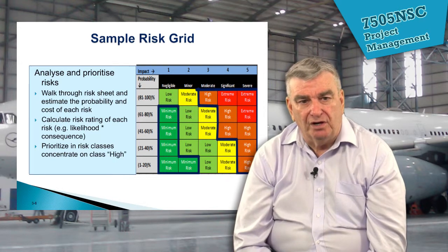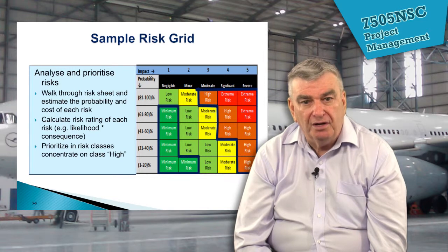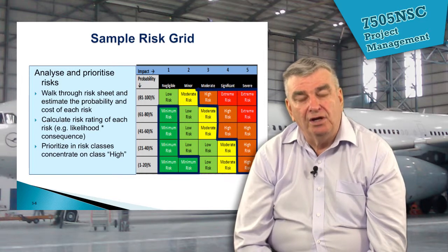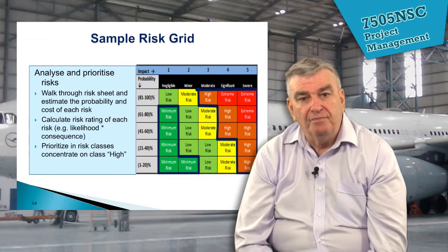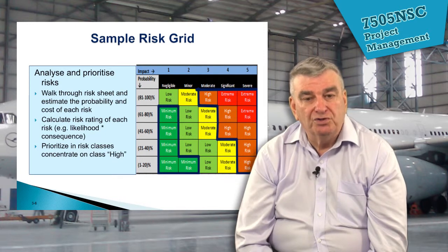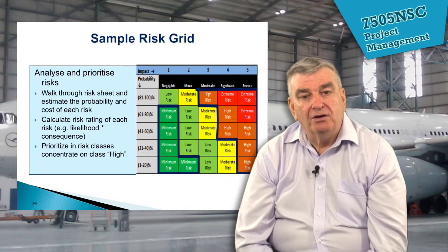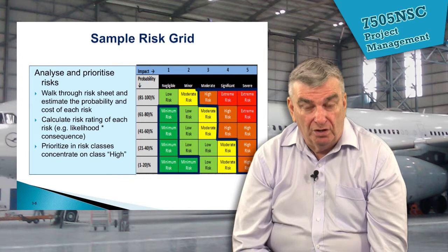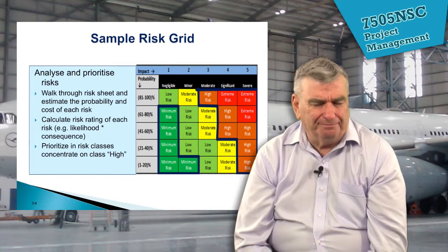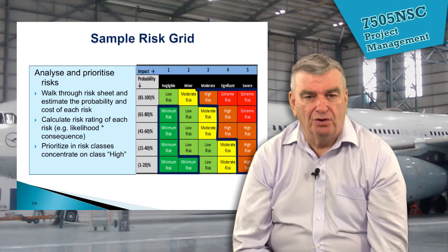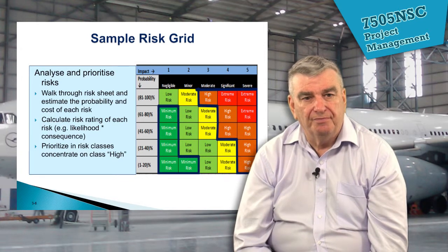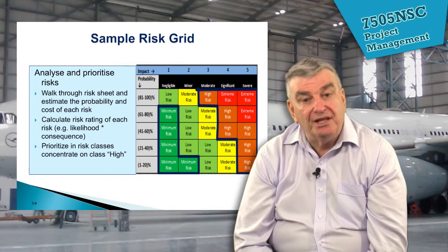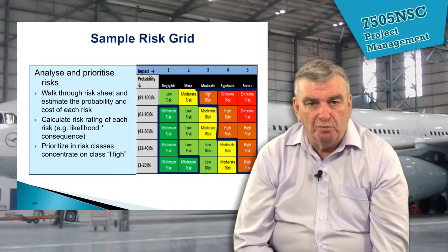We'll look at a sample risk grid. By working out the actual probability or likelihood and looking at the impact of a risk occurring, and grading these according to a scale of 1 to 5 or in percentage terms, we can work out how the risks appear on a matrix. The extreme risks are the ones we've got to attack immediately. Where there are minimal risks, it might be cheaper to simply tolerate that risk than to spend money trying to reduce it. Being able to produce a grid like that is an important part of risk management.